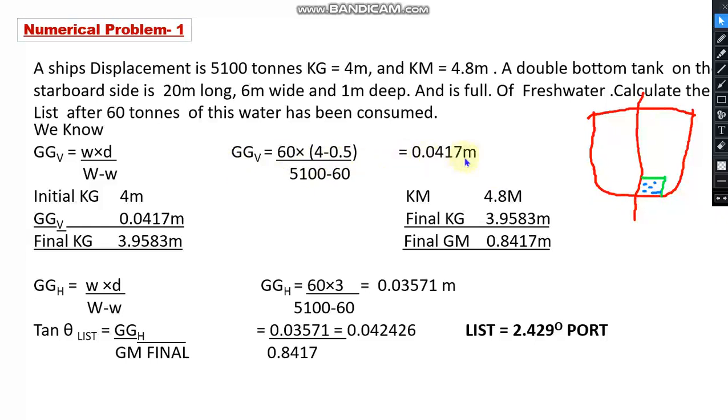So this calculation gives 0.0417 meters. So the initial KG is given to be 4. The vertical shift in center of gravity is 0.0417, which means the final KG should be 3.9583. Subtract these two values.